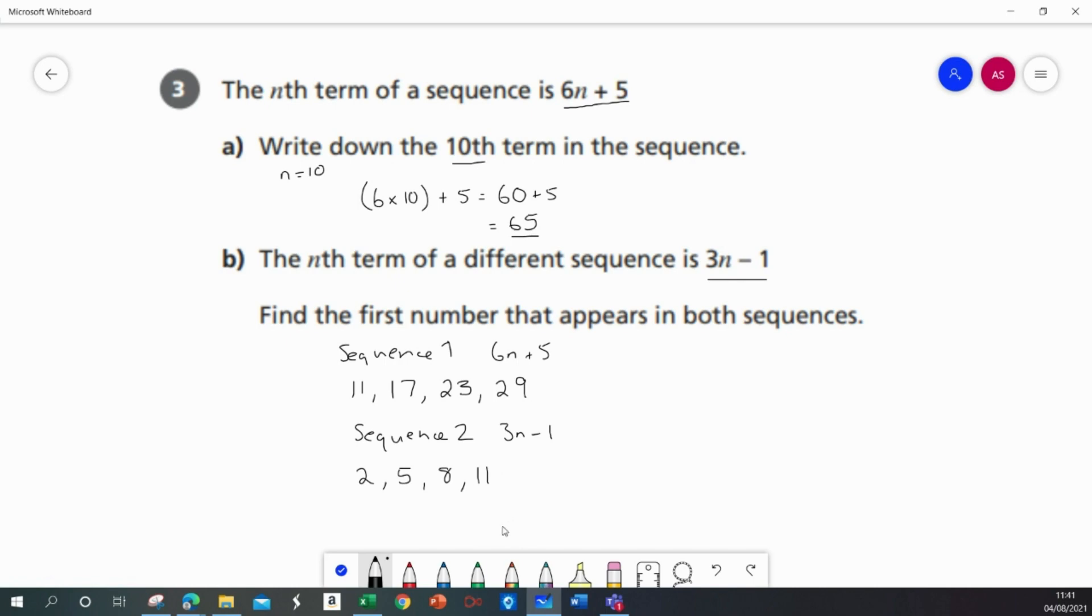At this point, I'm going to stop because I can see that I've got 11 in this sequence and 11 in this sequence. So the first number that appears in both sequences is 11.